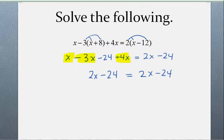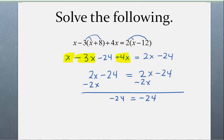Since they are identical, every number is a solution, so you write all real numbers. If you didn't notice that they were identical and tried to solve, your variables would disappear and you would have the exact same number on both sides, which is always true — meaning the original equation is always true. At this point, you write all real numbers. That equation is called an identity; the solution is all real numbers.